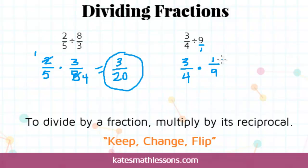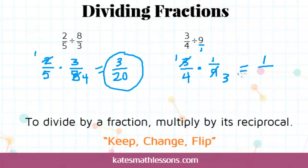Now I can either multiply straight across and then simplify, or I can simplify first. I see that this 3 and the 9 can both be divided by 3. 3 divided by 3 is 1, and 9 divided by 3 is 3. After I simplify, I just multiply straight across: 1 times 1 is 1, and 4 times 3 is 12. So the answer to this second problem is 1/12.